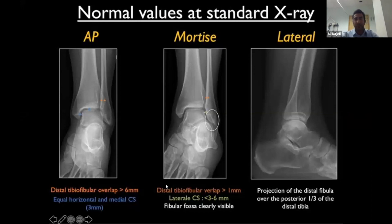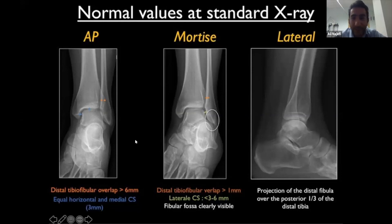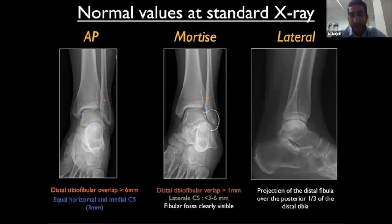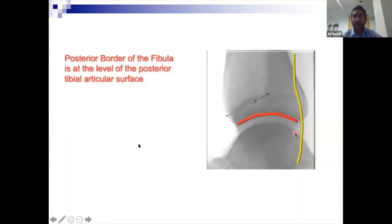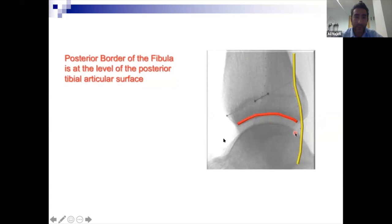When looking at X-rays: on the AP view, look at the overlap of the tibia and fibula and look for equal horizontal and medial clear space — that should be uniformly equal around the mortise. On the mortise X-ray, you should see a clean ankle mortise with equal clear space throughout, and you should always see a distal tibia-fibular overlap; if there isn't one, most of the time there's a syndesmosis injury. On the lateral X-ray, you should be able to see the posterior border of the fibula at the level of the posterior articular surface.